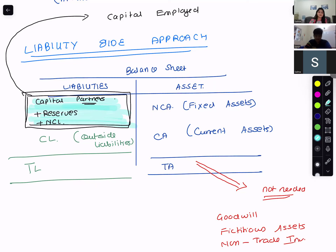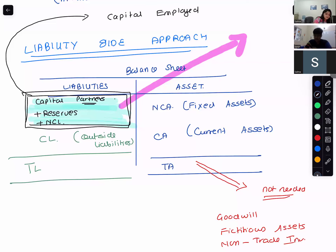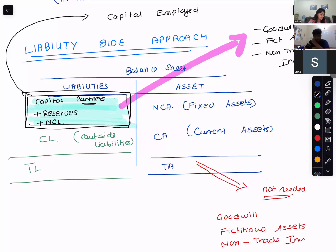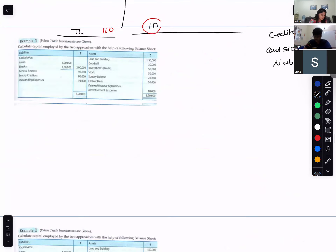From the liability side approach there are still some things you don't need. You will minus fictitious assets, minus goodwill, and minus non-trade investments. So the formula for capital employed using the liability side approach is: capital of partners plus reserves plus long-term non-current liabilities, then subtract goodwill, fictitious assets, and non-trade investments.